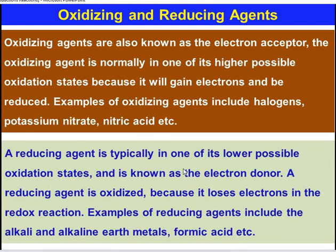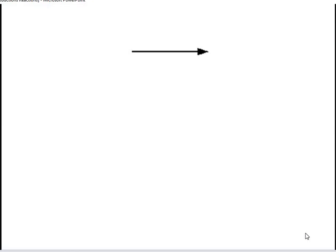Reducing agents are typically in one of their lower possible oxidation states and are known as Electron donors. Species with low oxidation states — like 0, minus 1, minus 2 — are Reducing agents. Our reducing agent is oxidized because it loses Electrons in the Redox reaction. Examples of Reducing agents include Alkali and Alkaline Earth metals, which have an oxidation state of 0 in their ground state, as well as Formic acid and other Electron donor species.